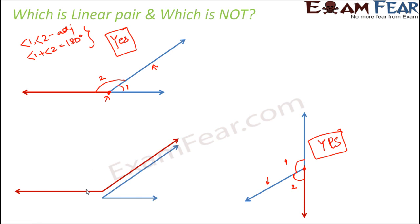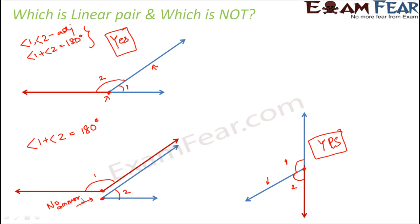In the third example, angle one is an obtuse angle and angle two is an acute angle. Even if their sum equals 180 degrees, they do not share a common vertex — the vertex of angle one and the vertex of angle two are different points. Since they are not adjacent, they cannot form a linear pair. Both conditions — adjacency and supplementary — must be satisfied.